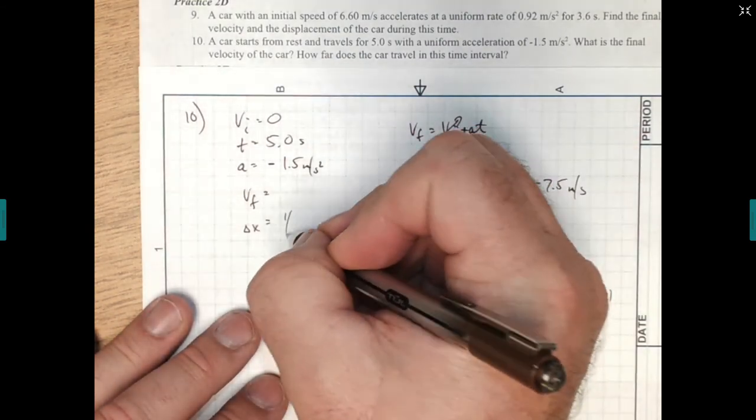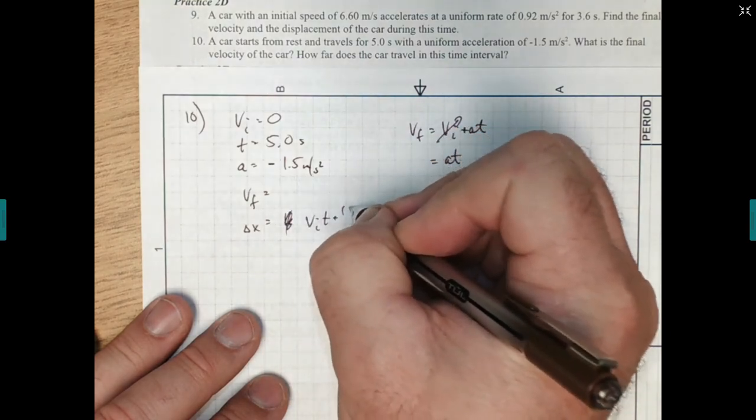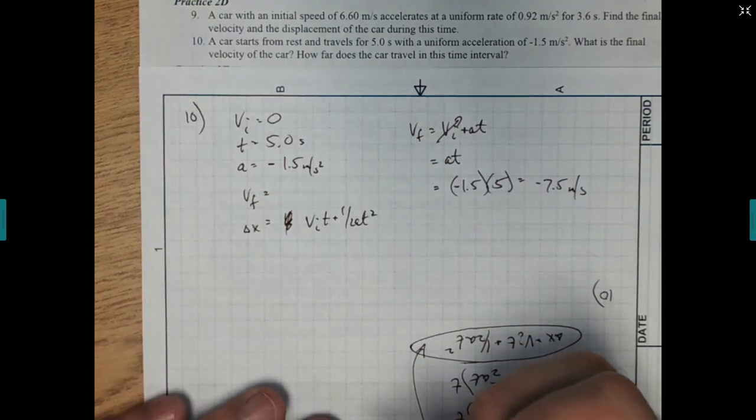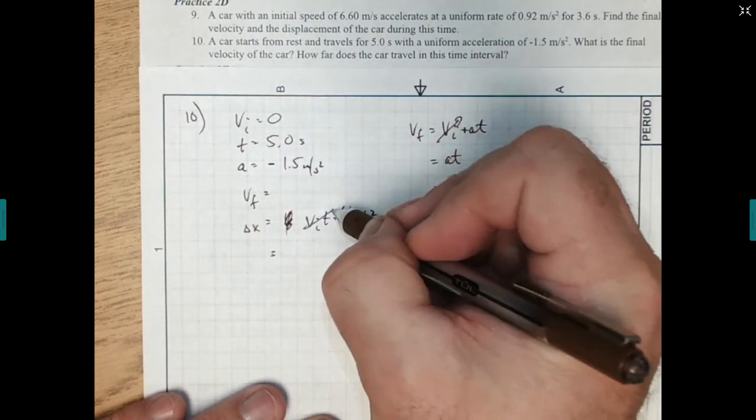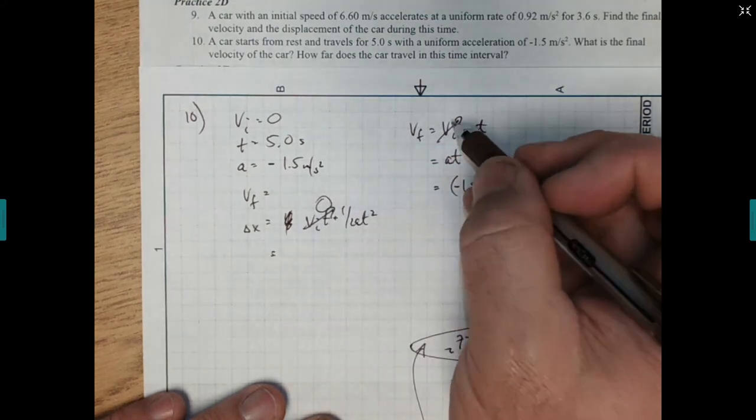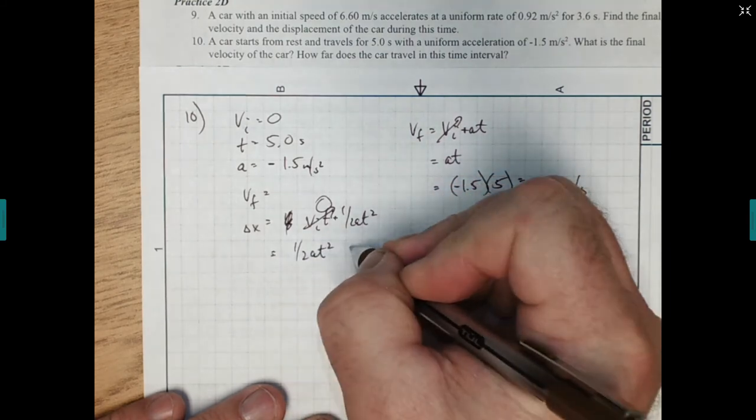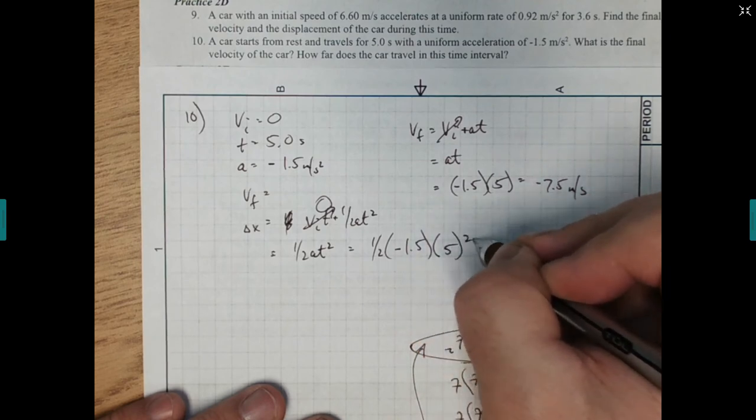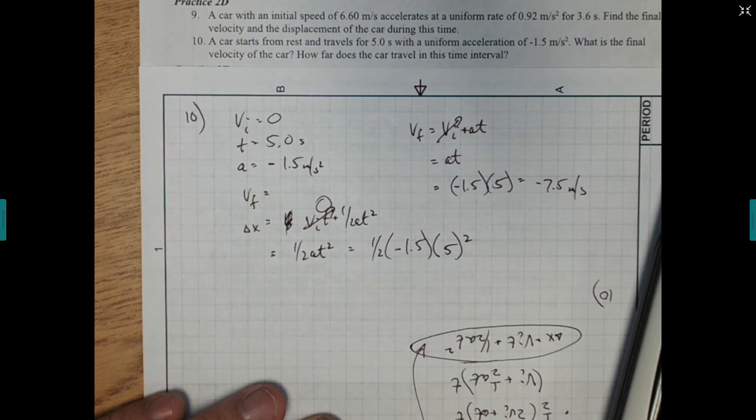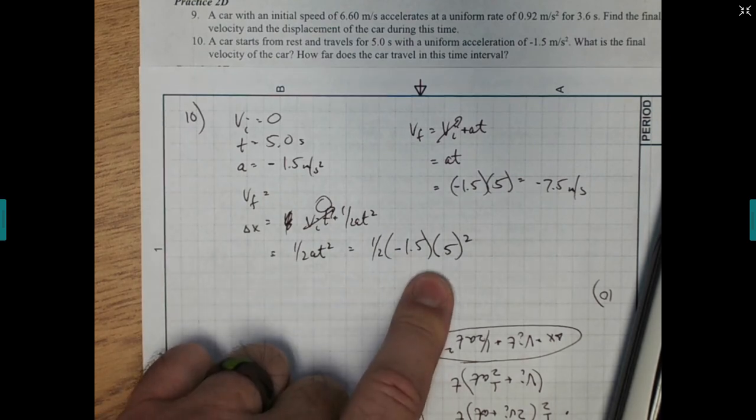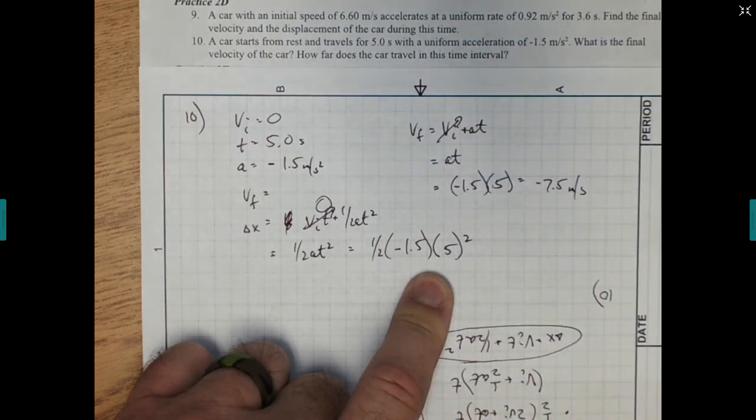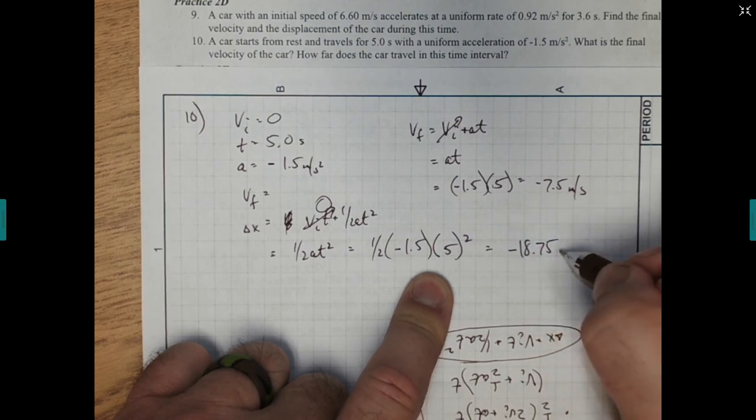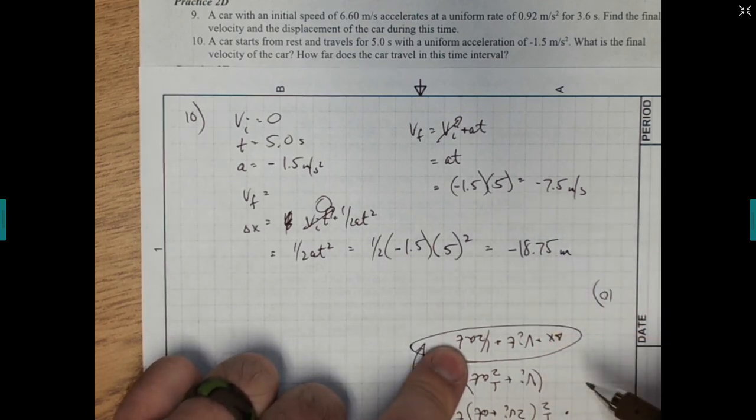My change in position. We're going to use the v i t plus 1 half a t squared. That's the one, the new one we're going to learn. So let's plug that. My initial velocity again is 0. So 0 times anything is 0. So we can again ignore that. Just like we ignored it up here. And we can just say this is 1 half a t squared. Which is 1 half times negative 1.5 times my 5 squared. Doesn't seem like all that would work out the same. But let's see if it does. And so if we get for position. So 0.5 times negative 1.5 times 5 squared. And we get negative 18.75. And that is my change in position in meters.